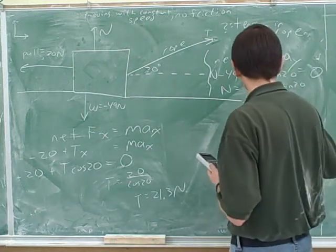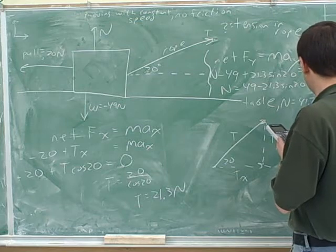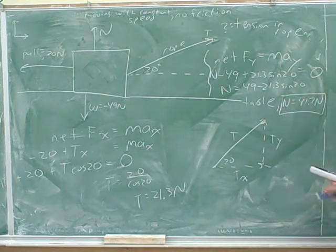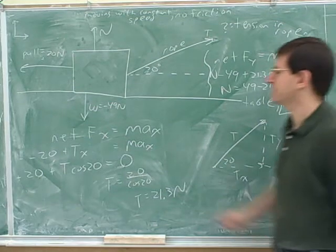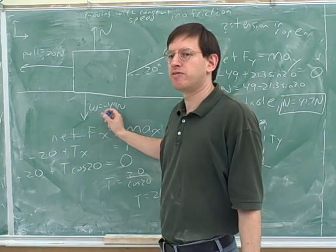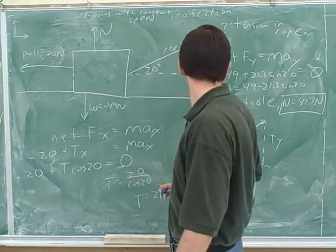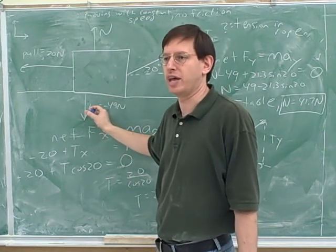And it'll be 49 minus 21.3 sine 20. 49 minus 21.3, so 41.7 newtons. It's too bad that n stands for normal force and for newtons. But anyway, the normal force here would be 41.7 newtons, which is not the same as the weight. Why is the normal force less than the weight here? Because it's getting extra help from the rope. If we put the tension force from the rope together with the weight, together with the normal force, that's enough to cancel out the weight.